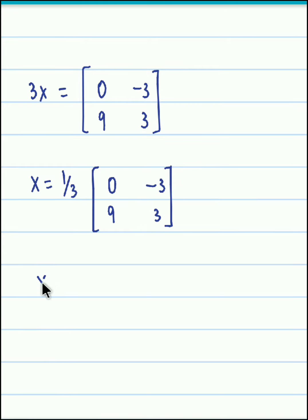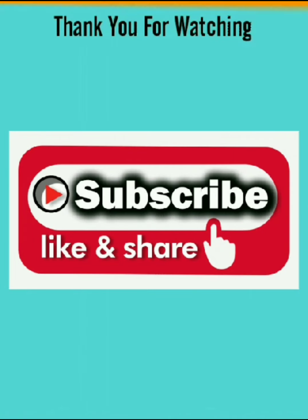So we have X equal to, now 1 by 3 into 0, so that gives 0. 1 by 3 into minus 3, that gives us minus 1. 1 by 3 into 9, that gives us 3. And 1 by 3 into 3, that would give us 1.